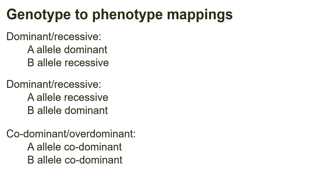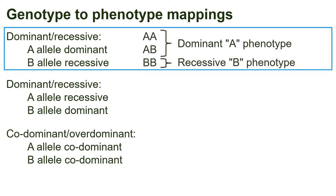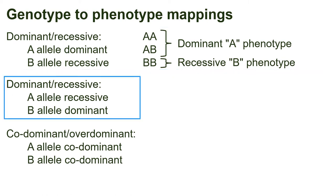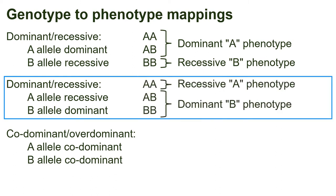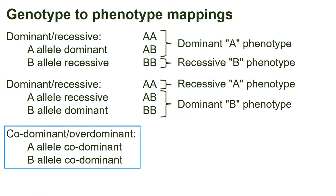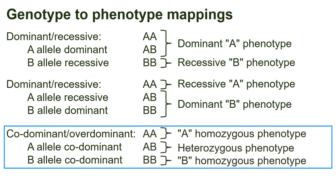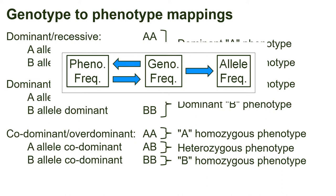There are three basic genotype-to-phenotype mappings. First, two alleles A and B where A is dominant and B is recessive — the AA and AB genotypes give the dominant A phenotype, while only the BB genotype gives the recessive B phenotype. Second, the same but reversed: A is recessive and B is dominant — only the AA genotype gives the recessive A phenotype, while both AB and BB give the dominant B phenotype. Third, A and B are codominant or overdominant — the three genotypes are all distinct: AA gives the A phenotype, BB gives the B phenotype, and the heterozygote gives a third phenotype. In this third case, genotype and phenotype frequencies can be used to directly estimate one another, but we would still need HWE to calculate genotype frequencies from allele frequencies.